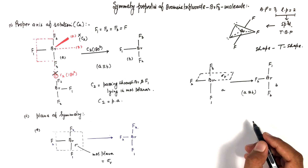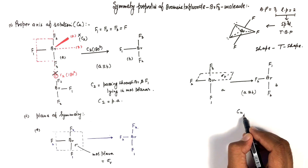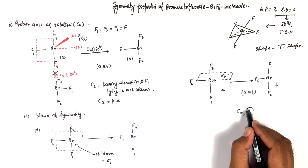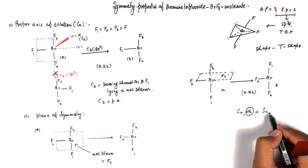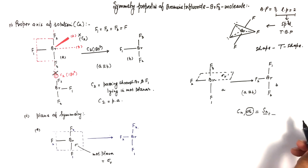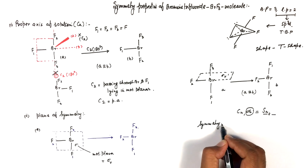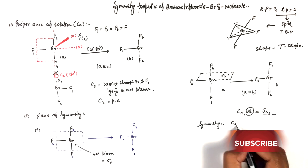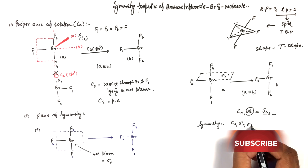This molecule does not have an inversion center, and there is no improper axis of rotation present, because although the molecule has a Cn operation, it does not have any σh. That's why there is no possibility of any Sn axis. So the total symmetry elements present in this molecule are: one C2 axis, one σv, and one σv'.